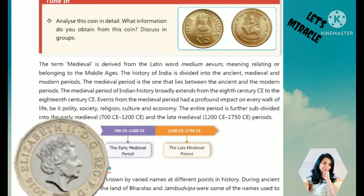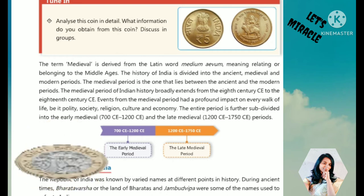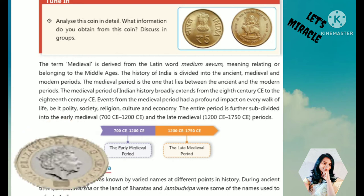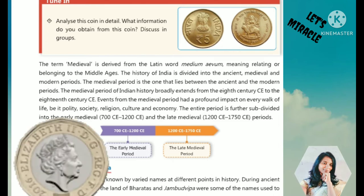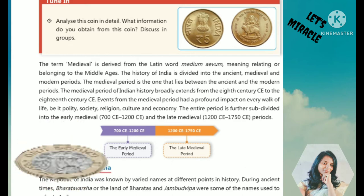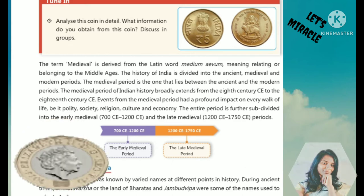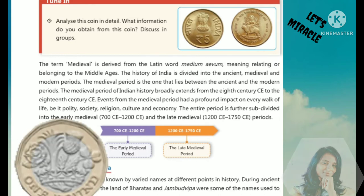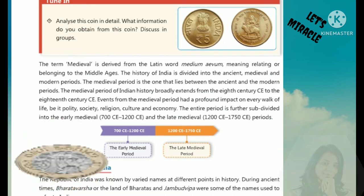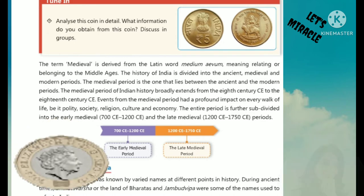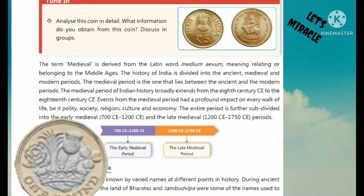Here is the picture of a 5-rupee coin. Analyze this coin in detail — what information do you obtain from this coin? Discuss in groups. We can see there is a coin of 5 rupees which is golden in color. The national emblem is there, the rupees 5 symbol is there, Bharat and India is printed — the name of the country. The back side also we can see — there is a goddess picture and the name of the goddess is given. This way, coins are also sources of information about history.